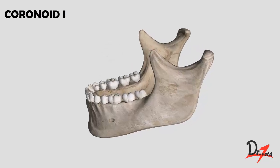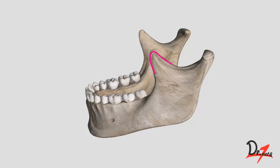The coronoid process is a triangular projection from the anterior end of the superior border, and its anterior border is continuous with the anterior border of the ramus. Posteriorly, beyond the mandibular notch, we have the condylar process.